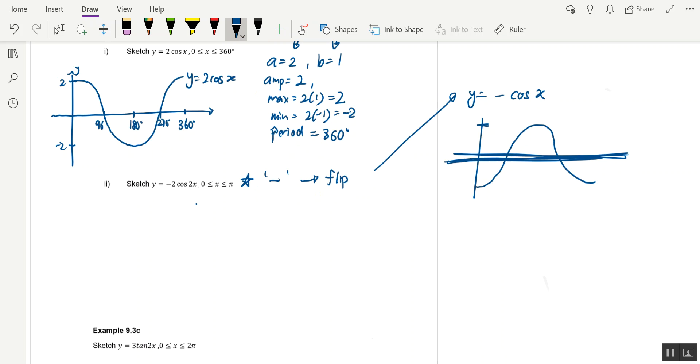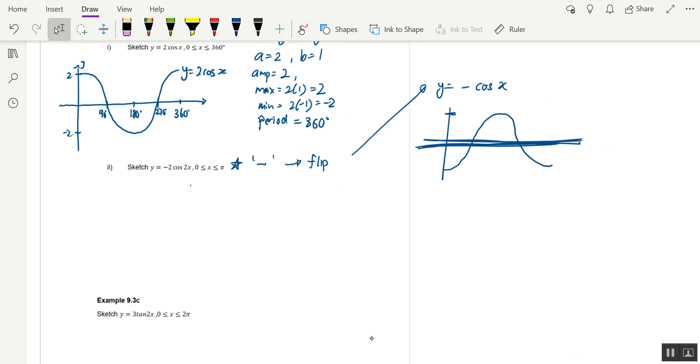Now first we write down the a is equals to negative 2, b is equals to 2, which means that amplitude is equals to 2 only. Amplitude does not take into account a negative, it's just the difference between the highest point and the middle point. Maximum equals to negative, because there's a negative 2 in front.